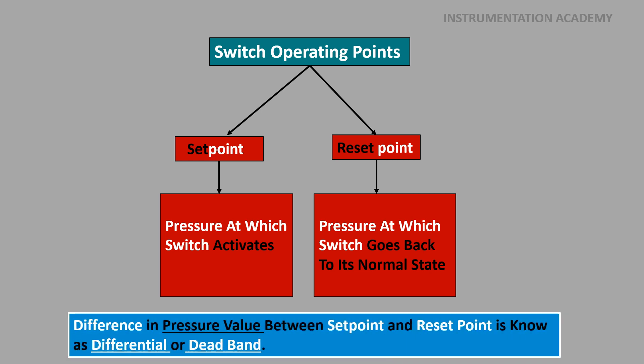The difference in pressure value between the set point and the reset point is known as differential or dead band of a pressure switch. In most switches differential can be adjusted, and some switches have fixed and non-adjustable differential.